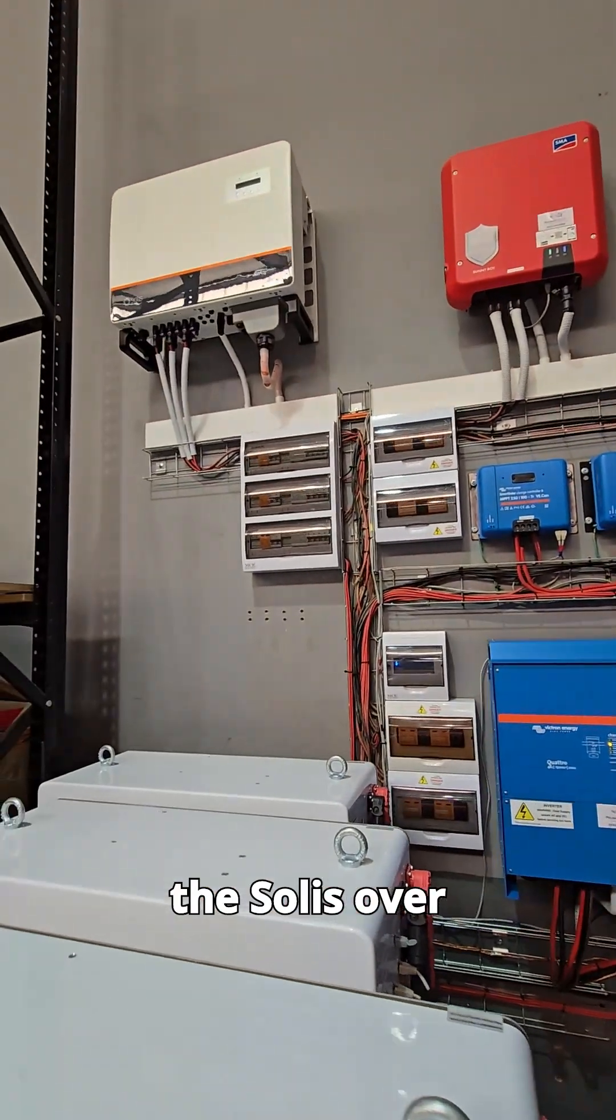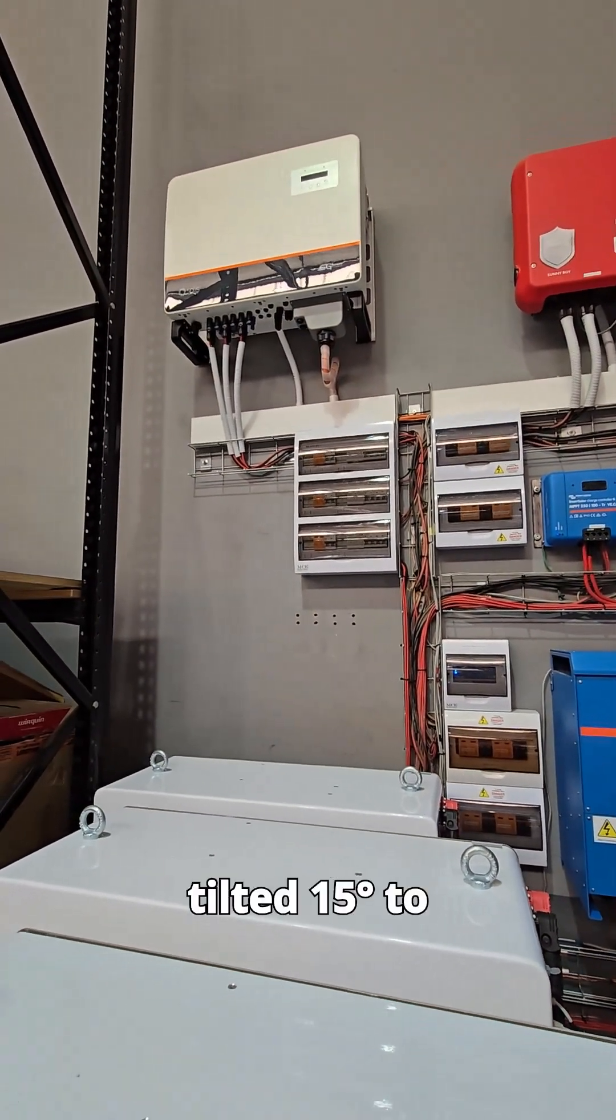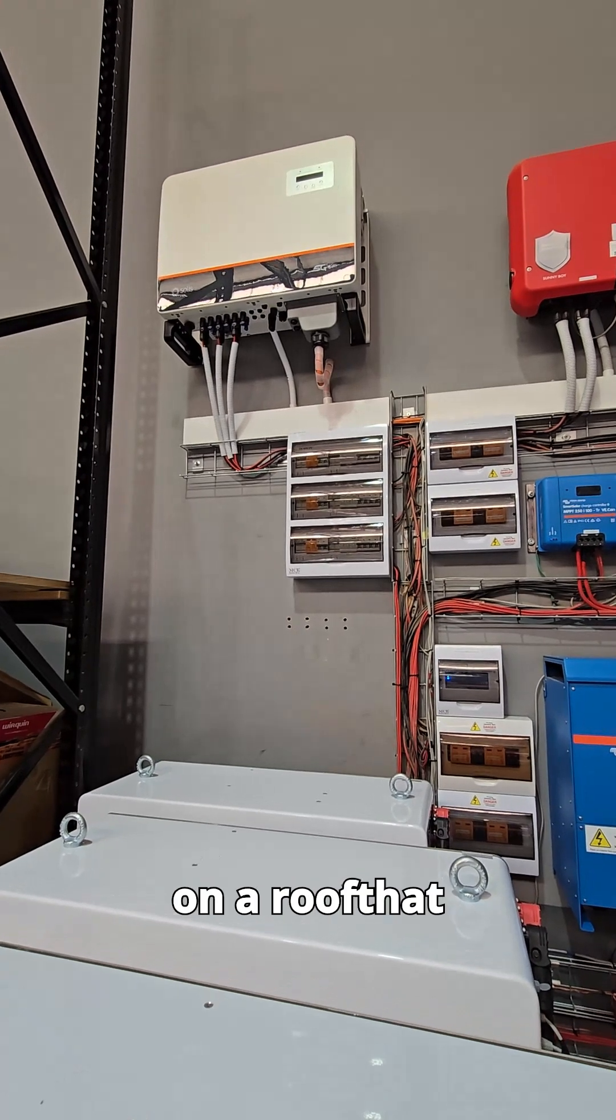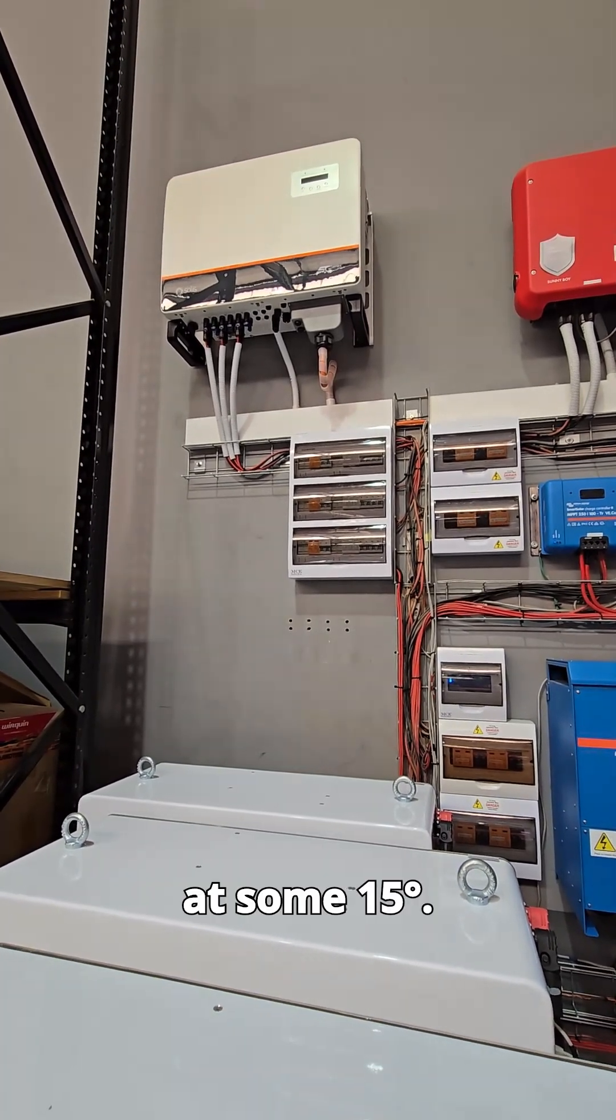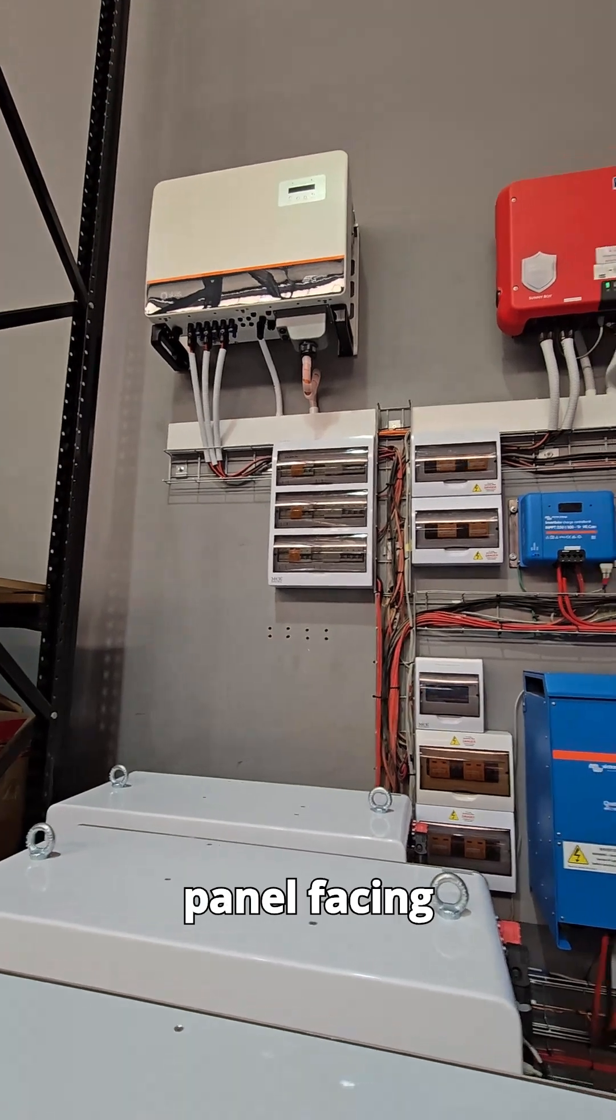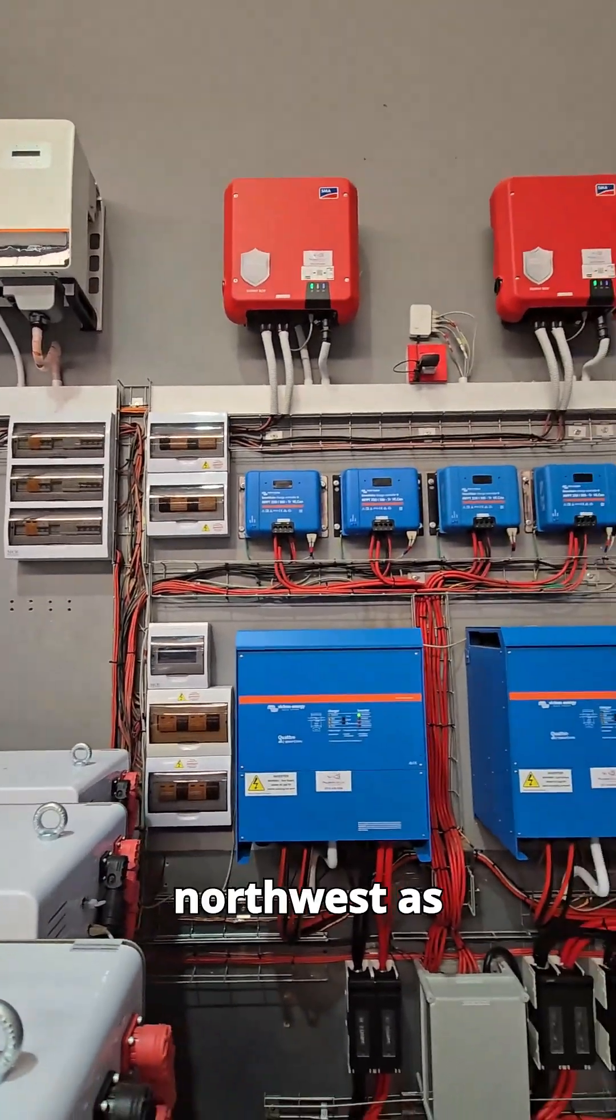Also, the panels on the Solace over there are tilted 15 degrees to the north on a roof that also slopes east and west at some 15 degrees. So the net result is the panels facing north-east and then north-west.